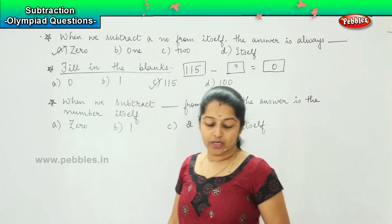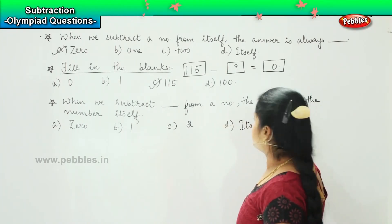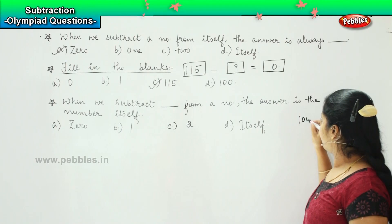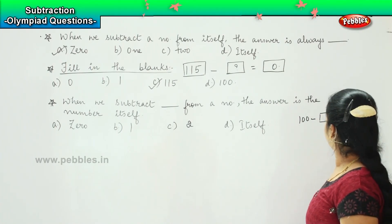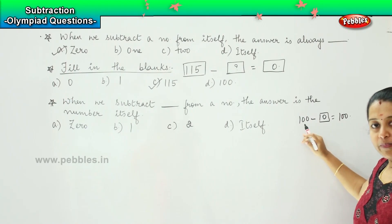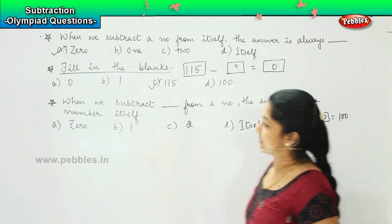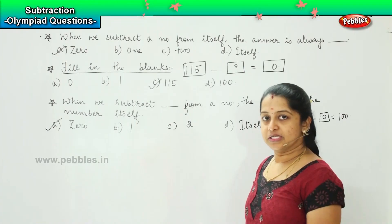Now the question says, when we subtract dash from a number, the answer is the number itself. For example, if I reduce 100 minus something, the answer will be 100. So what should be the answer here? Very good, it should be zero. Only if I reduce zero from the given number, my answer will remain the number itself. So what is the right answer? Yes, it is option a, zero. Clear? Shall we move ahead?